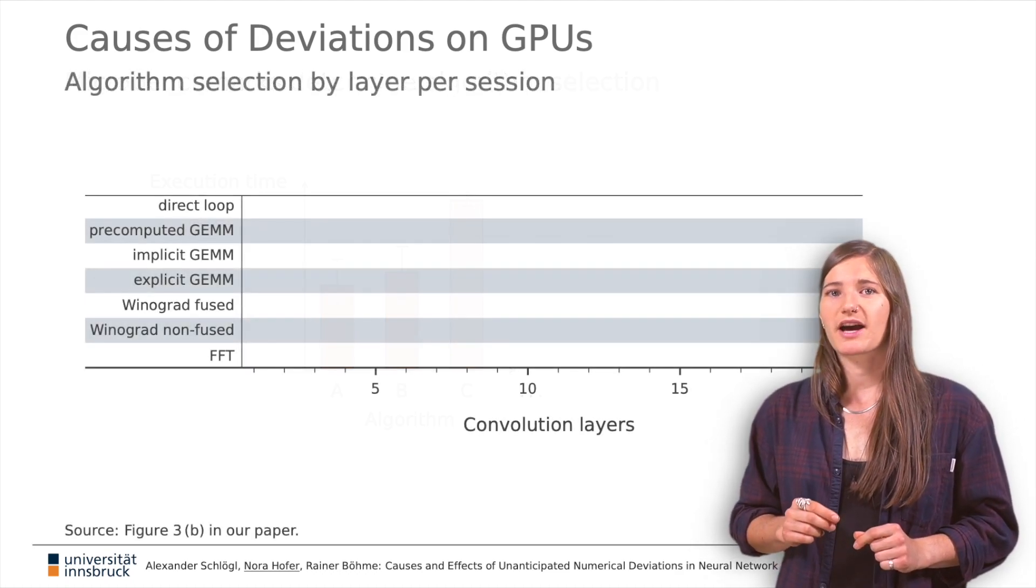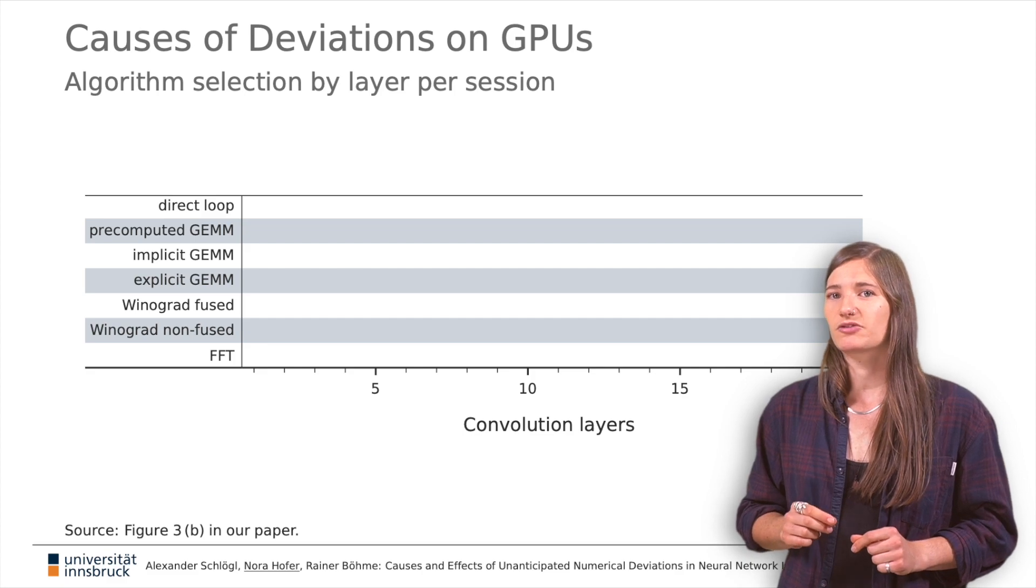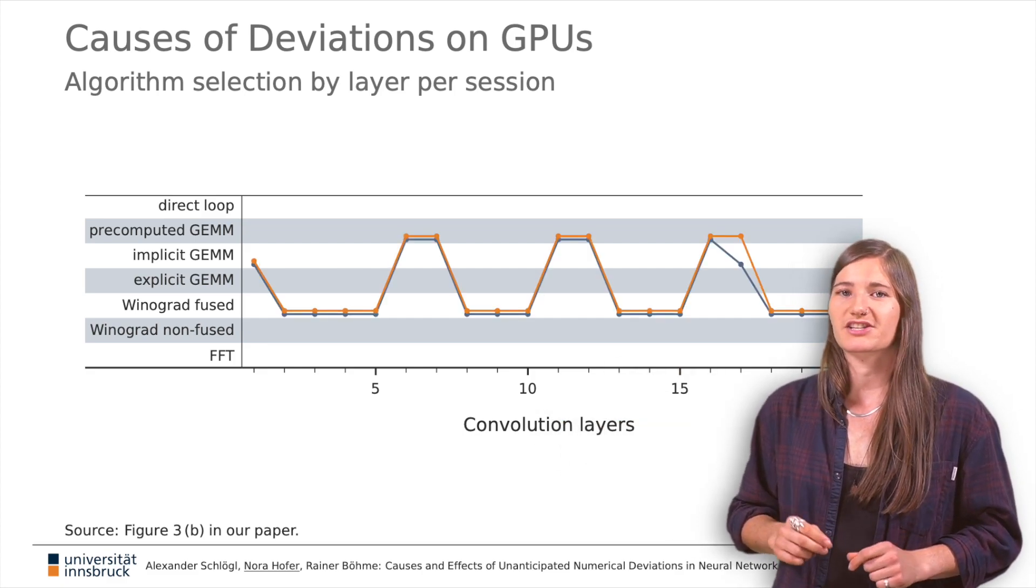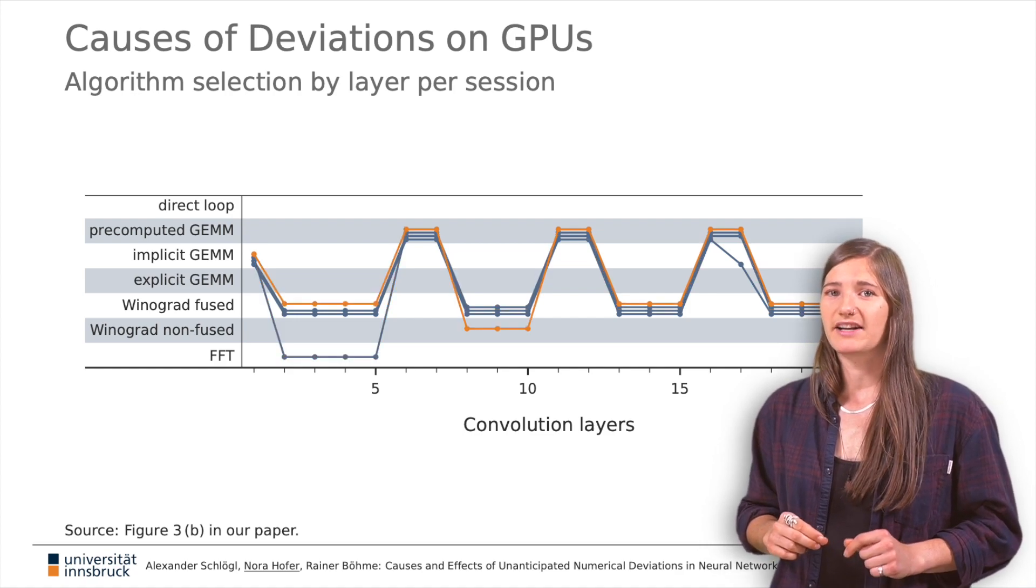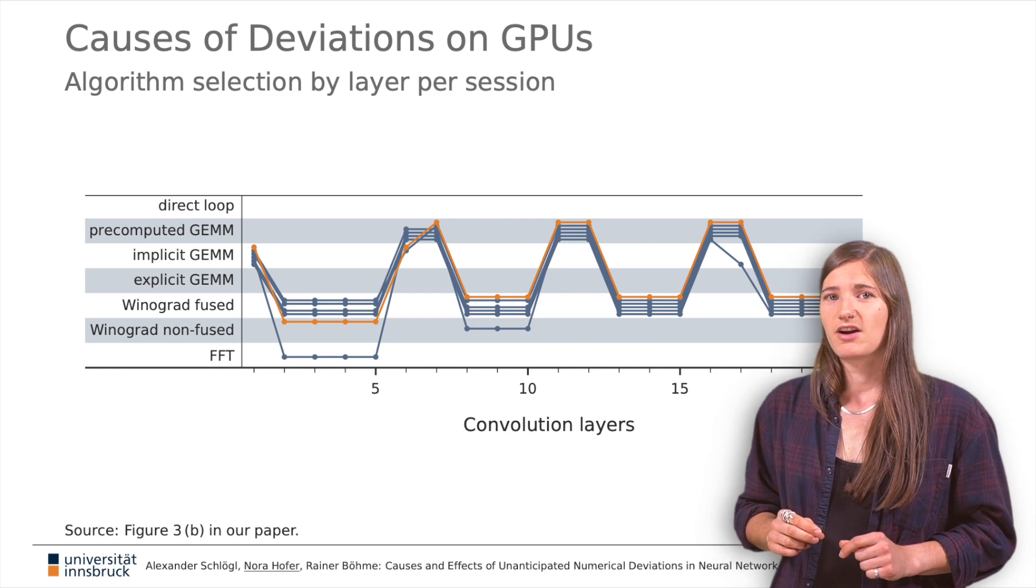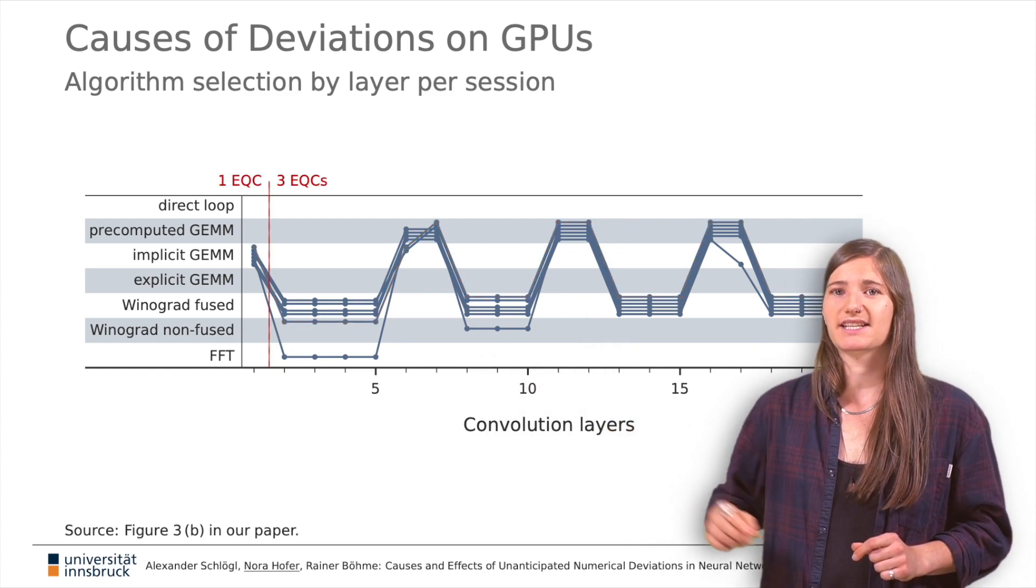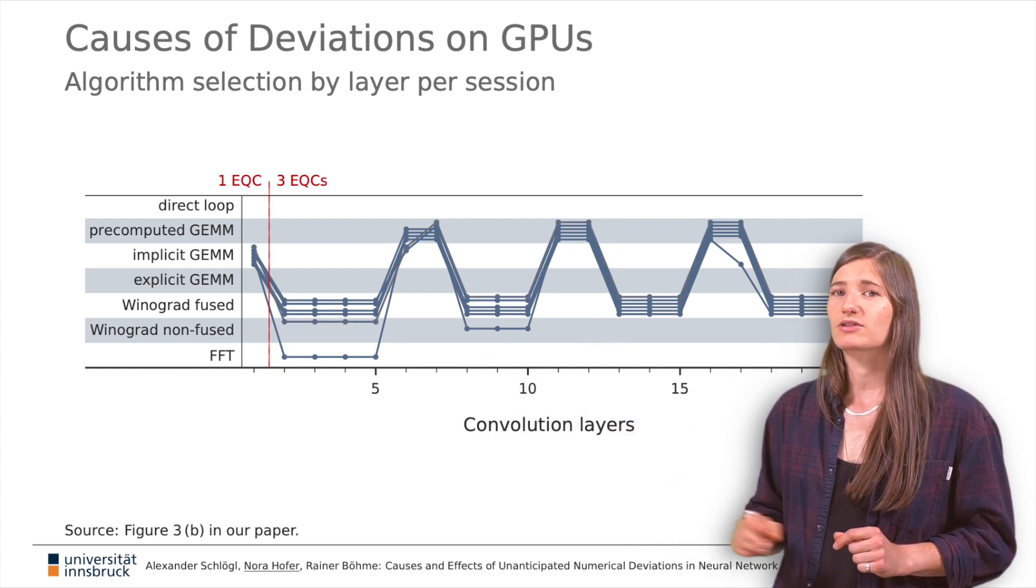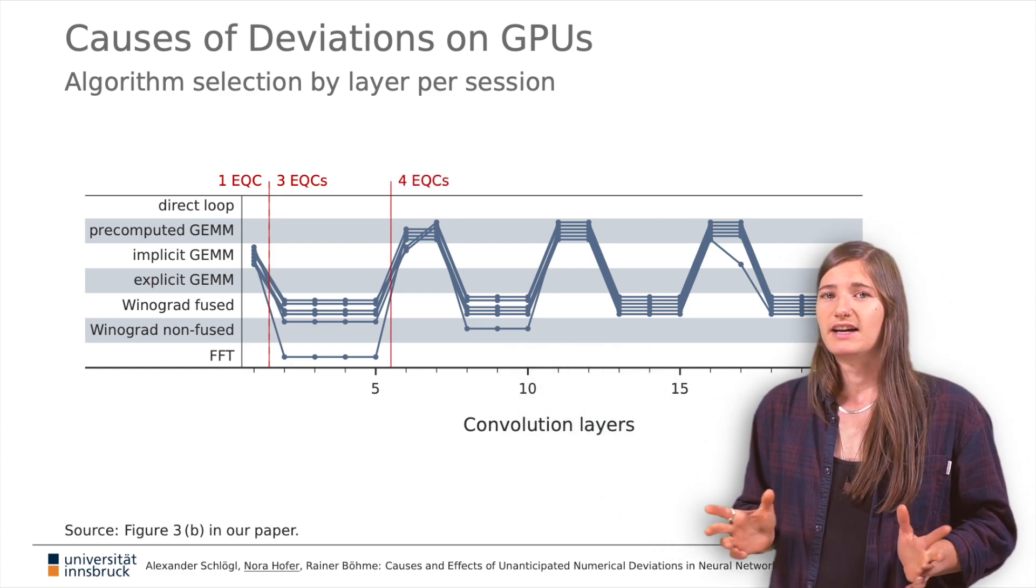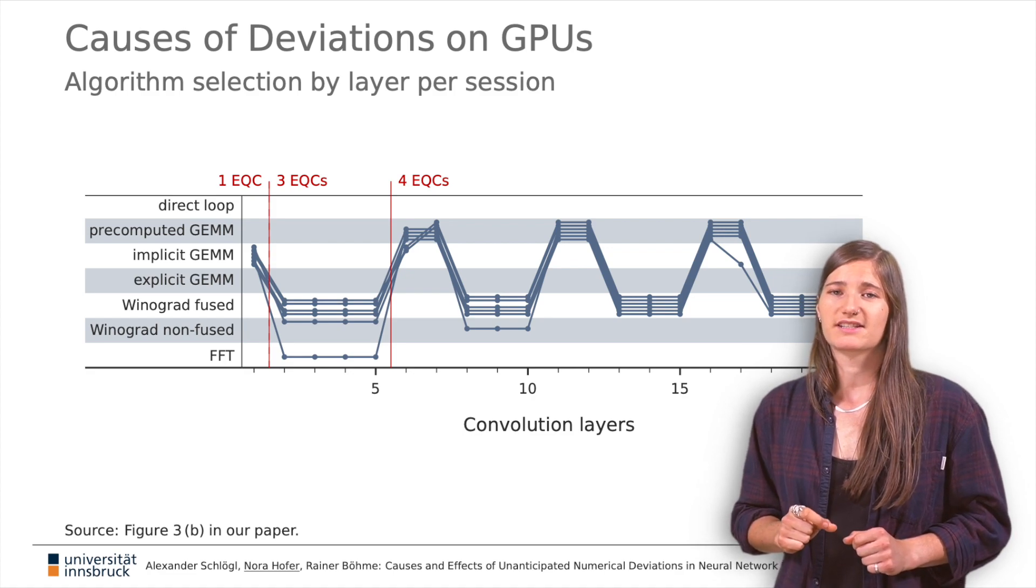My co-author Alex has built infrastructure to visualize this algorithm selection per layer. Each plotted line corresponds to a session. We can also annotate at which layer deviations occur and how they propagate. For example, the single equivalence class at the first layer forks out into three. The fourth equivalence class appears after layer five and we observe no further deviations thereafter.